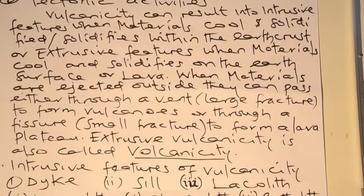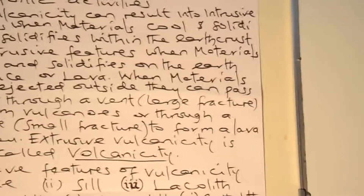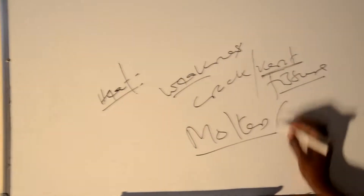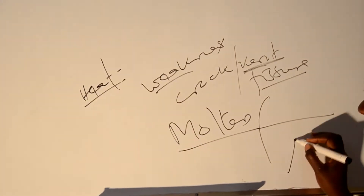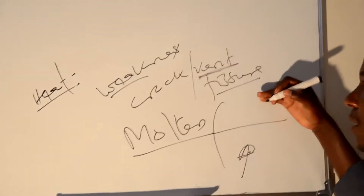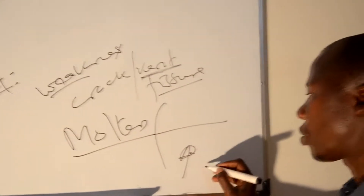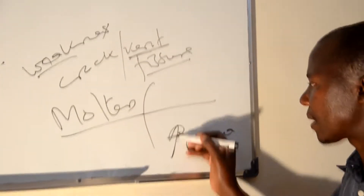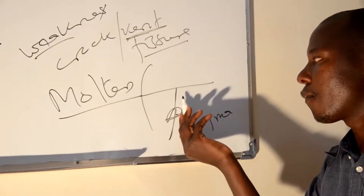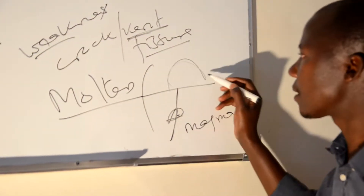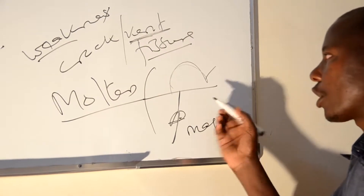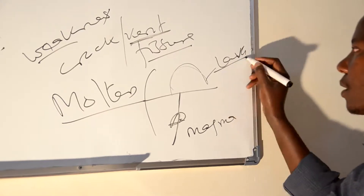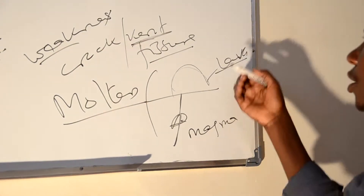The molten material that remains within the earth's crust before reaching the surface is called magma. But wherever this molten material erupts and passes through to the area of weakness — the fissure — and comes on the earth's surface, it changes from molten to lava, called lava, because it has solidified from liquid into a solid state.